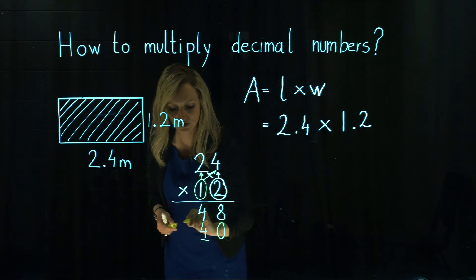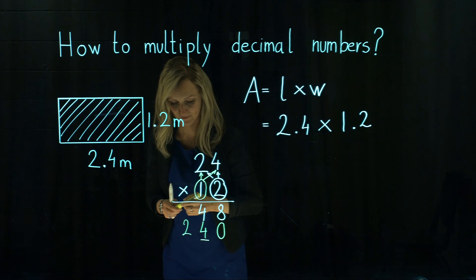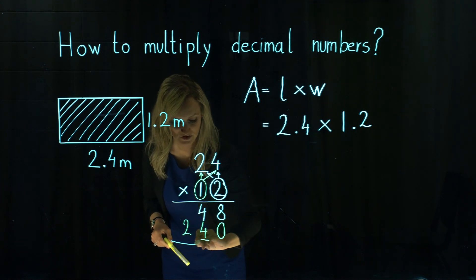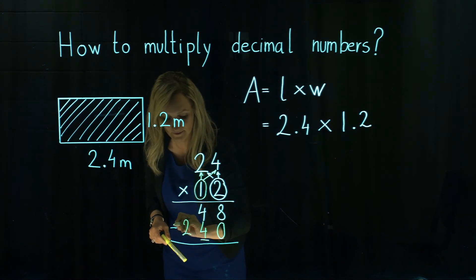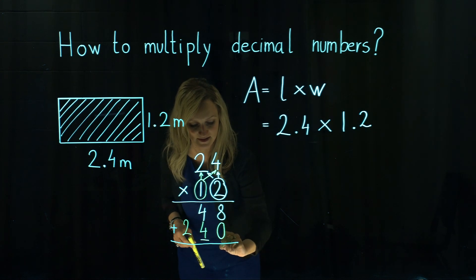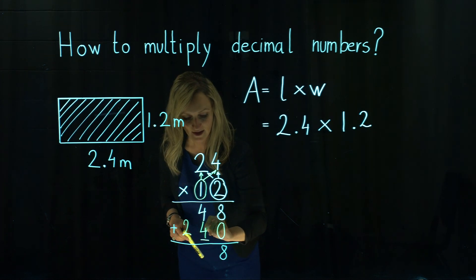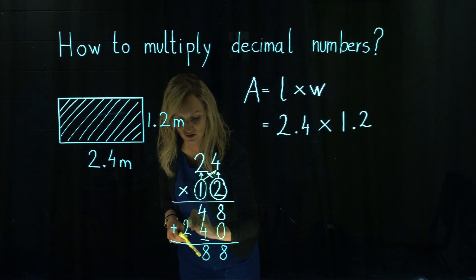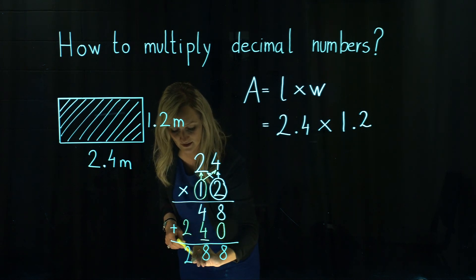1 times 2 is 2. Then we add both rows together and we get 8 plus 0 is 8, 4 plus 4 is 8, 2 plus nothing is just 2.